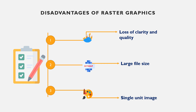For example, when you convert a drawing into a bitmap image in CorelDRAW, to edit such image you will need Corel PhotoPaint because the image can no longer be separated. Examples of raster graphic packages include Microsoft Paint, Corel PhotoPaint, CorelPainter, and Photoshop.